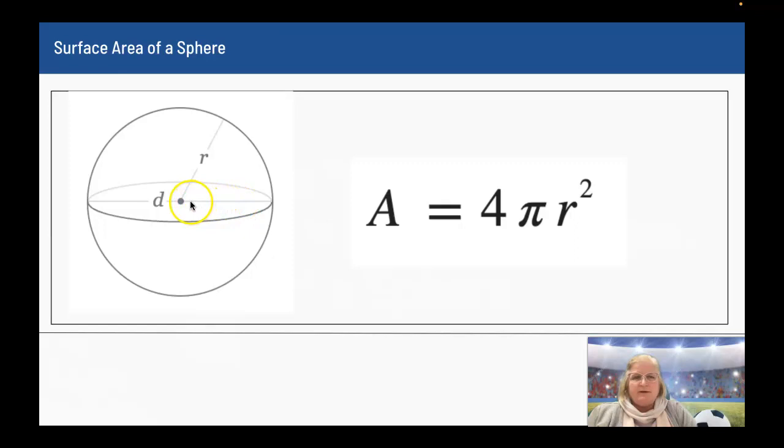When you have a sphere, you have the diameter and you have the radius. The formula to find the surface area is A equals 4 pi r squared. A lot easier than the volume.